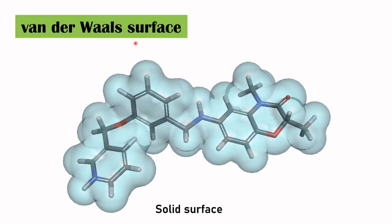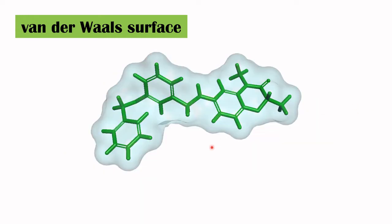This is also a Van der Waals surface in which I have represented in solid form. You can see the area which was covered by the ball — it is a solid surface representation and the molecule is in the gray colored sticks. This is also Van der Waals surface in which I have represented the molecule as a green colored stick model, and the surface you can see is the white cloud around the molecule. This is Van der Waals surface.